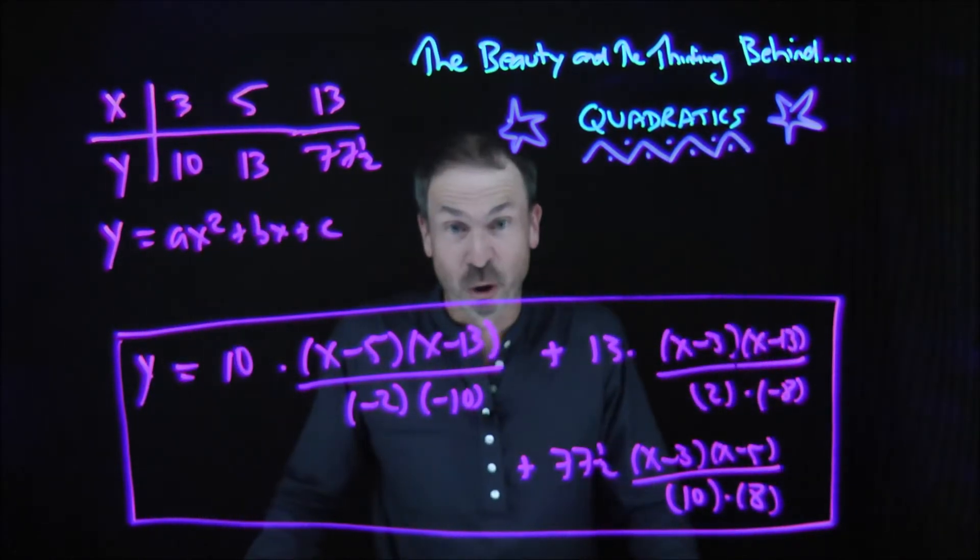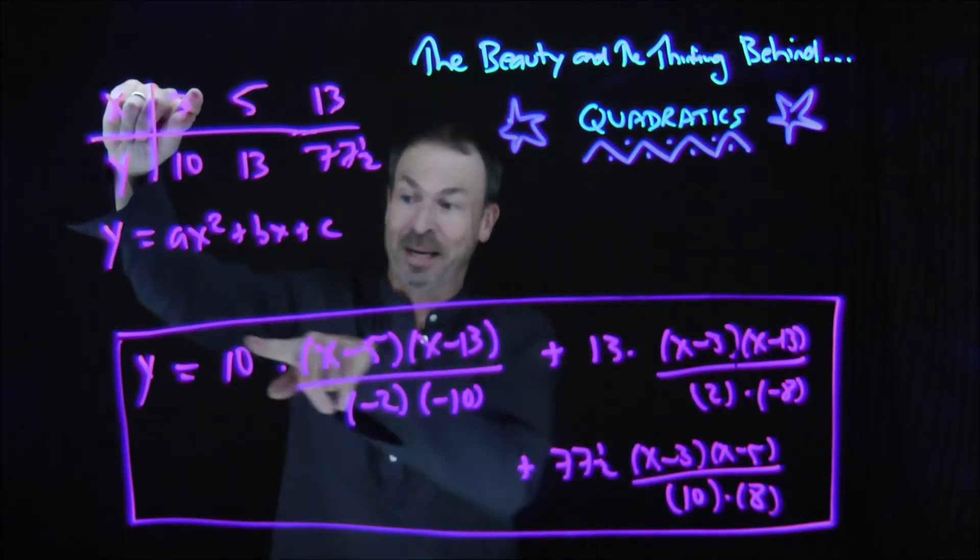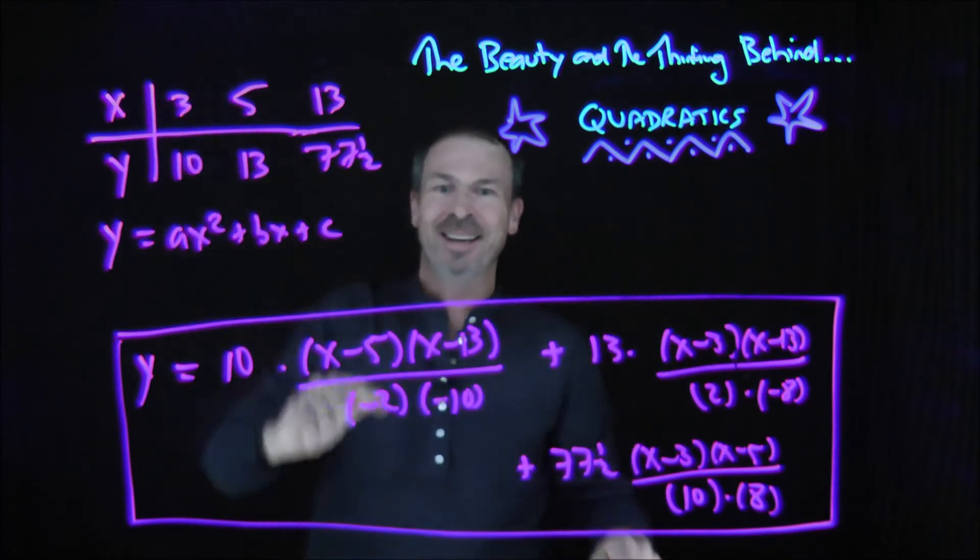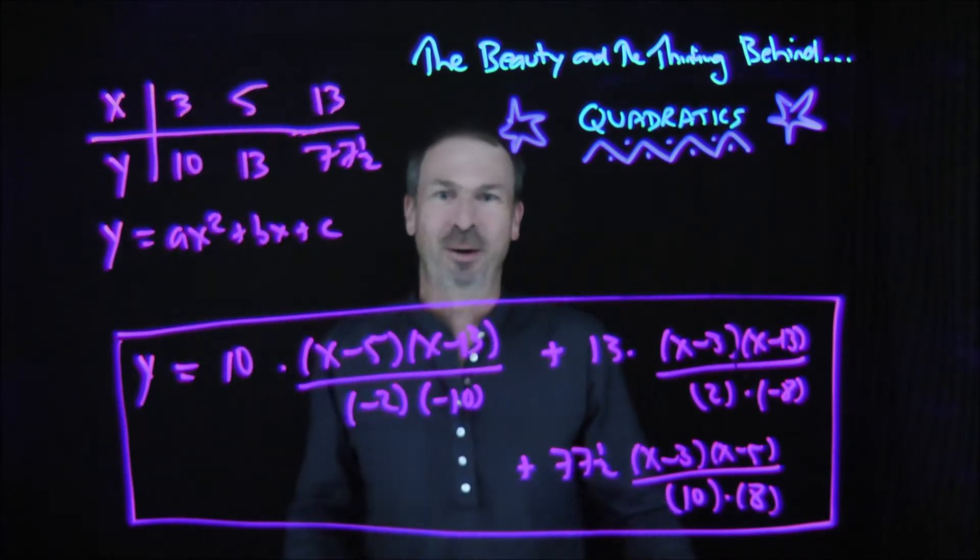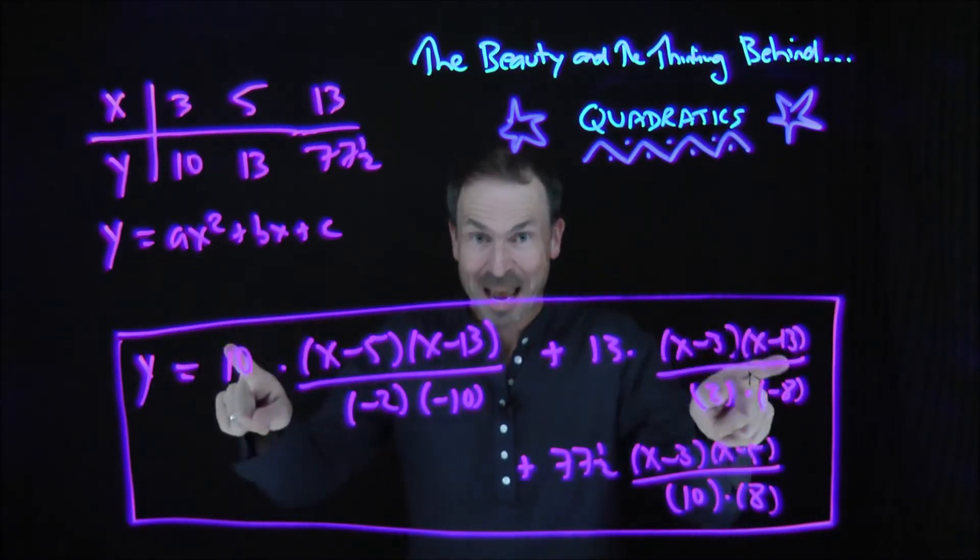Now, is this quadratic expression doing what I want it to do? Now, if I put in x equals 3, work this out, do I get y equals 10? If I put in x equals 5, do I get y equals 13? If I put in x equals 13, do I get y equals 77 and a half? Well, let's find out. What did I do? How did I engineer things so that would actually happen?